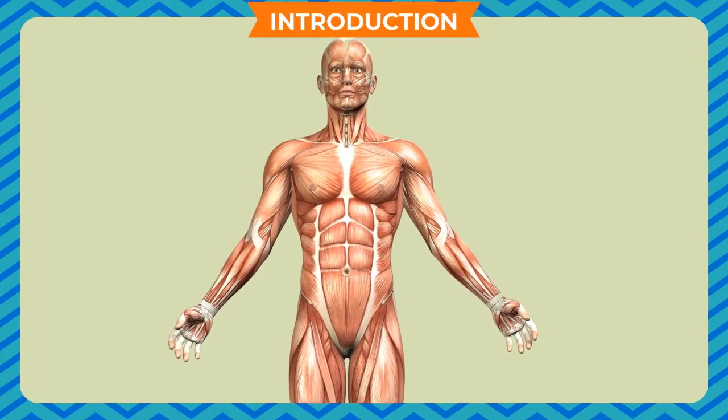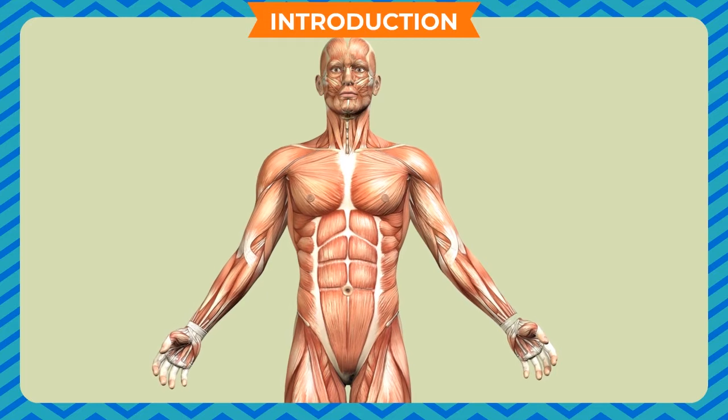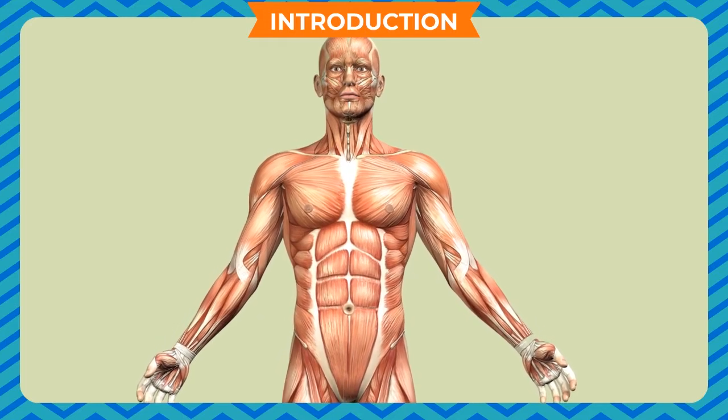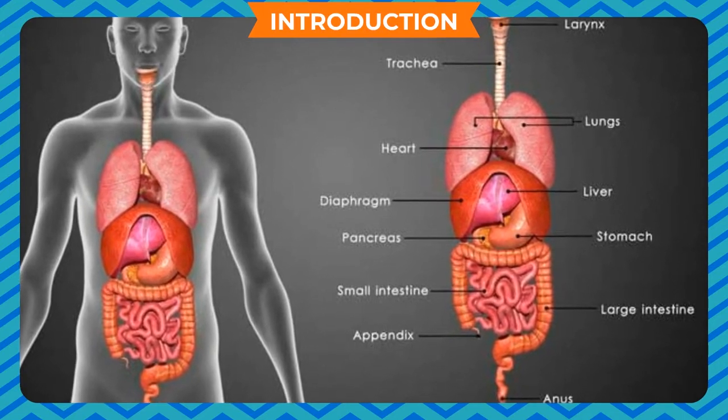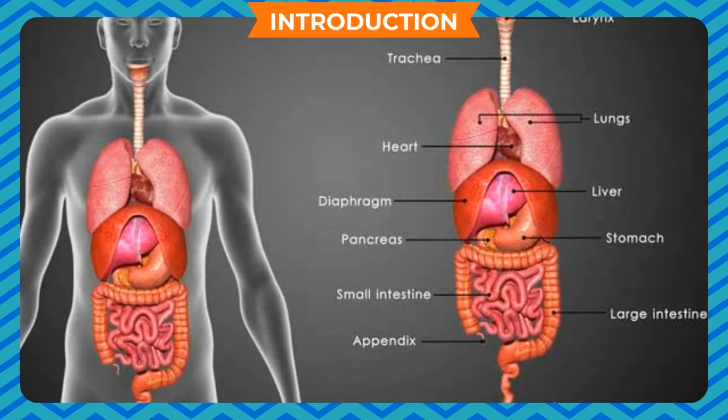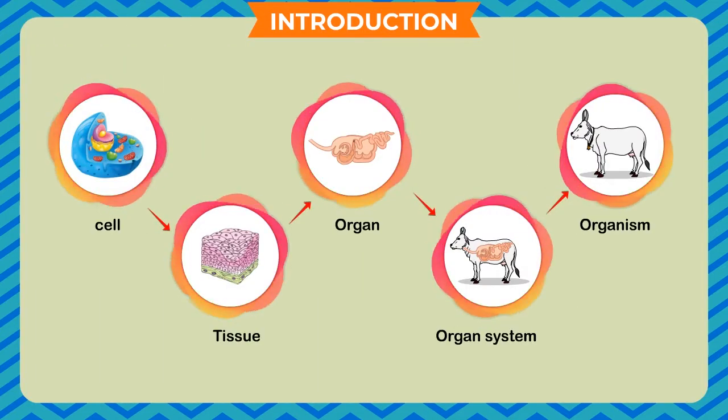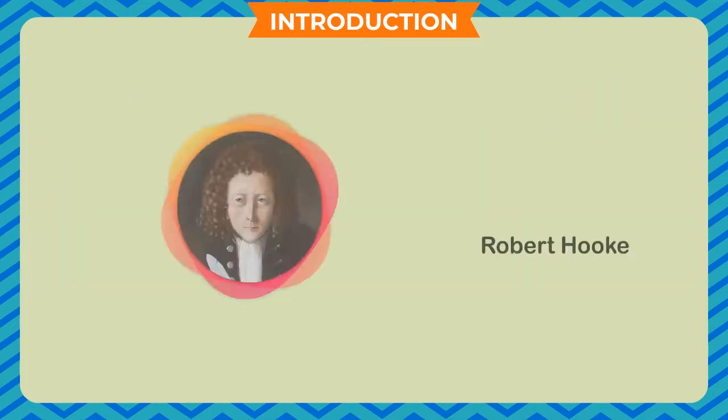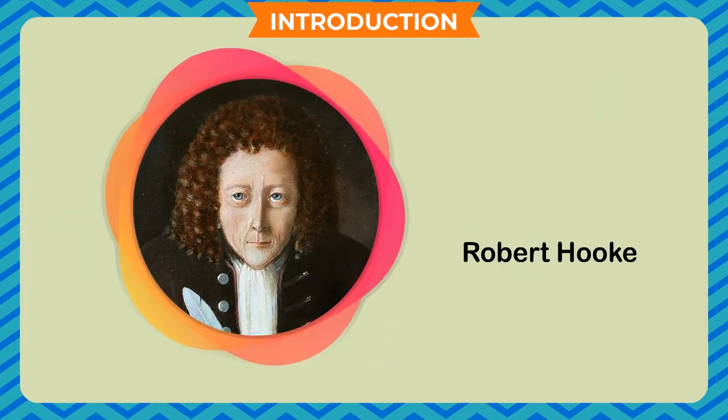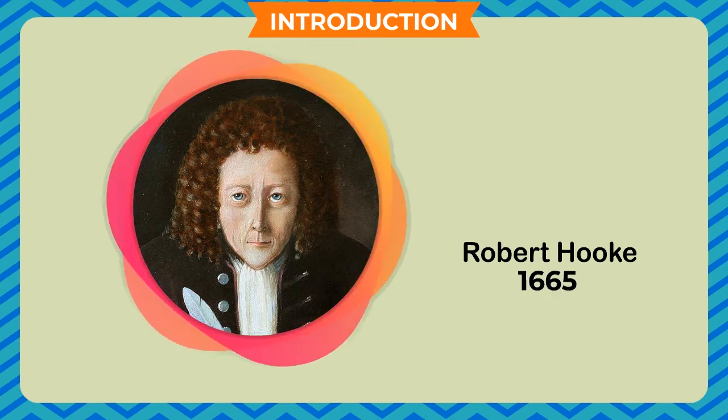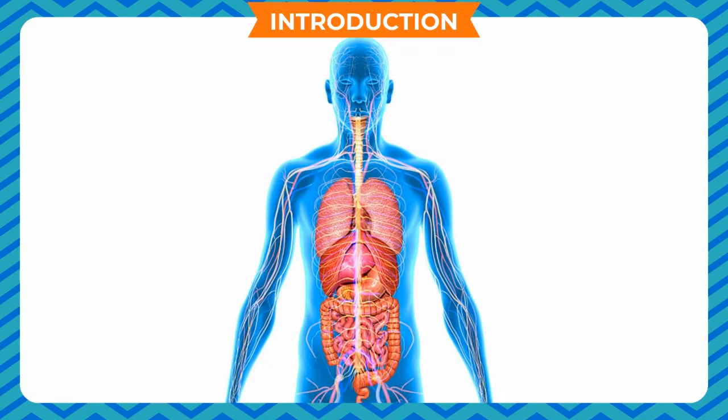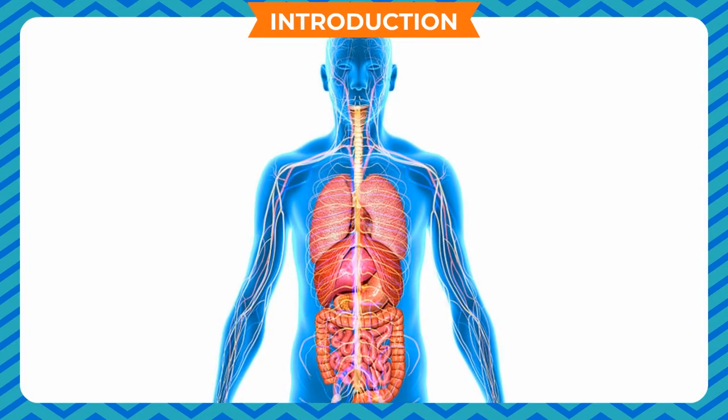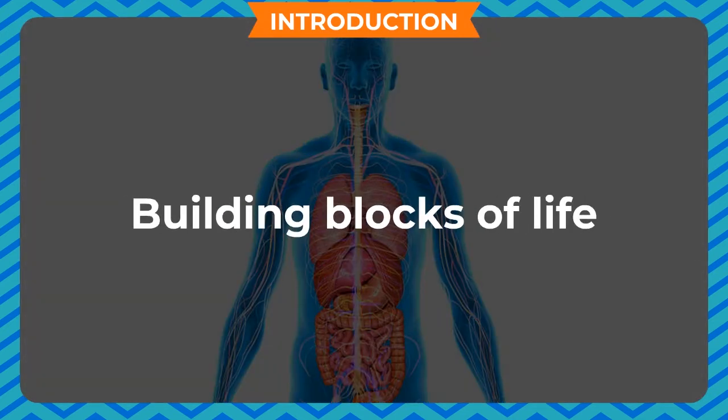As you know, all the functions in our body are performed by various systems inside the body. These systems work together to perform particular tasks with the help of different organs in the system. Each organ is made up of tissues which are made up of many cells. Cell was discovered by scientist Robert Hooke in 1665. The cell is the structural and functional unit of life. This is the smallest and basic unit of our body. It is called the building blocks of life.